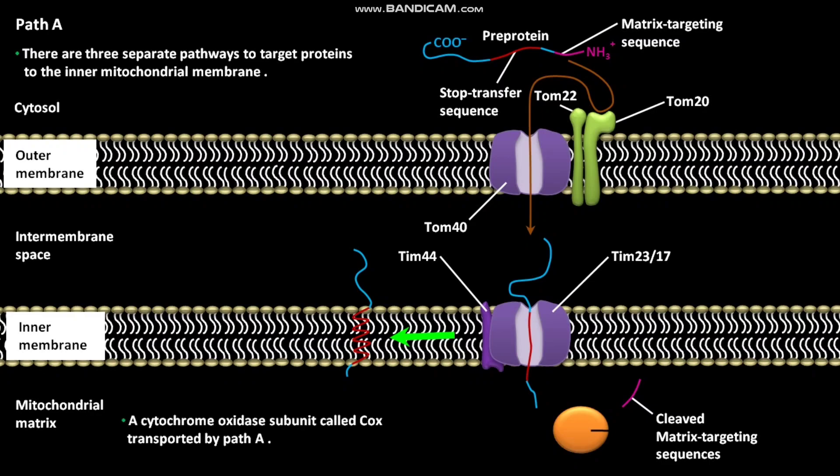A cytochrome oxidase subunit called COX-VA protein is transported by path A.